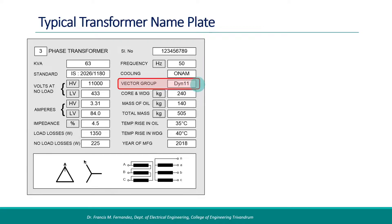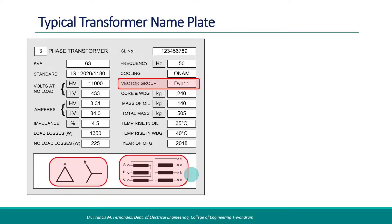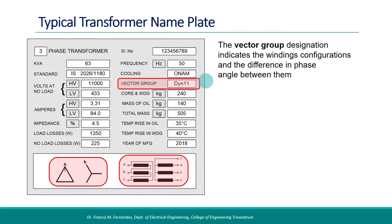Also, we have some graphic symbols printed on the nameplate that are related to the vector group designation. The vector group designation indicates the winding configurations and the difference in phase angle between them.